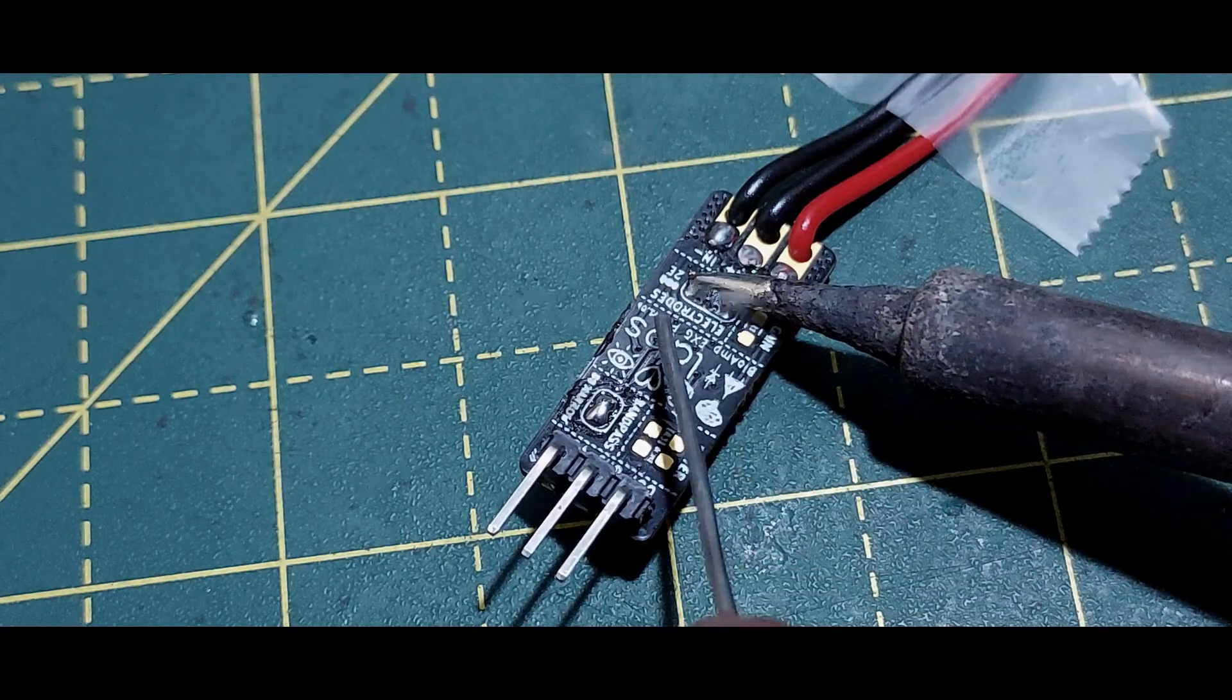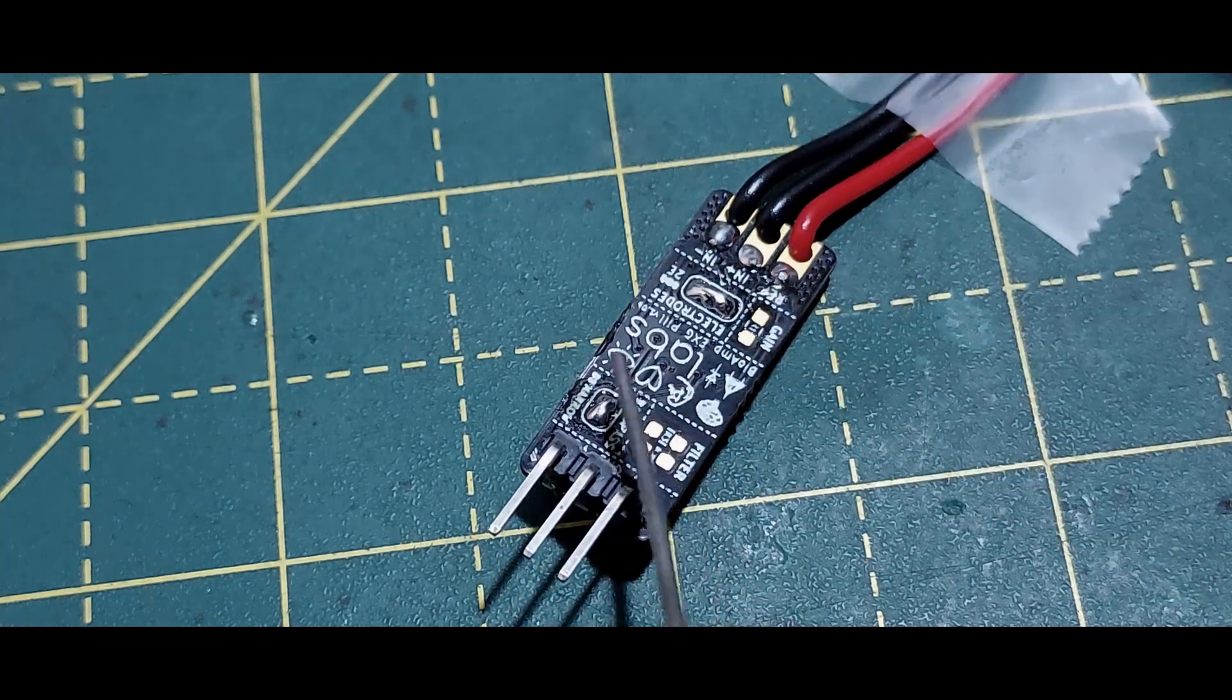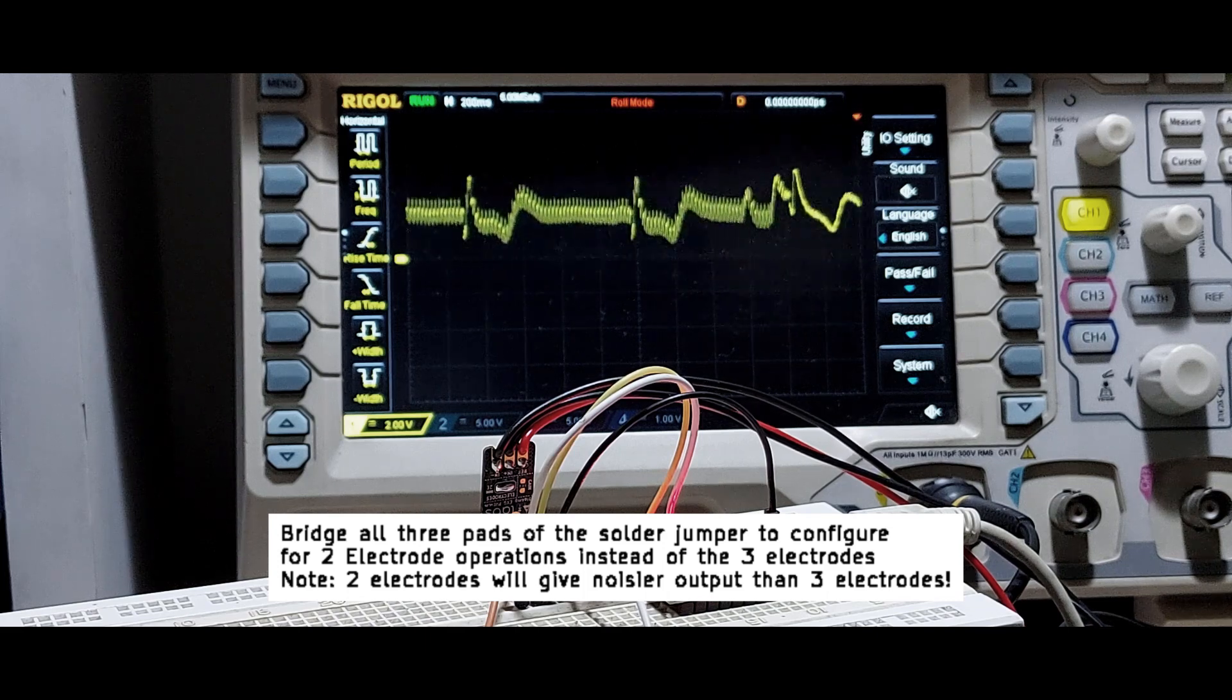The next jumper we are going to short connects the DRL node to the inputs through 1M resistors to make a 2-wire reading and as promised, there is a lot of noise compared to when the DRL electrode is connected.